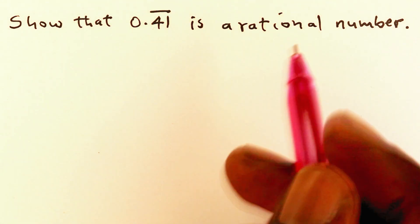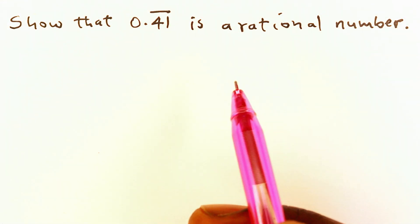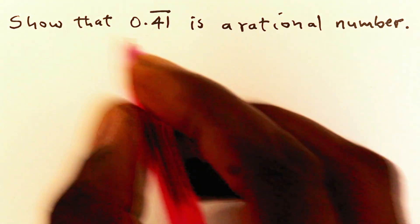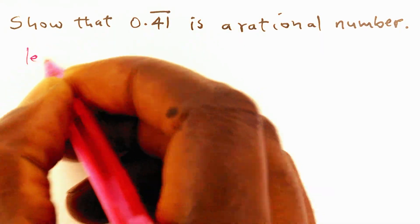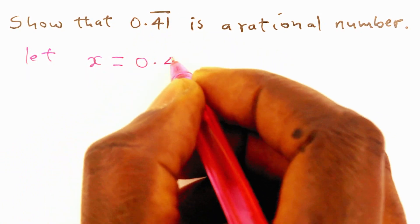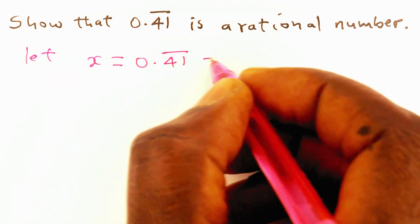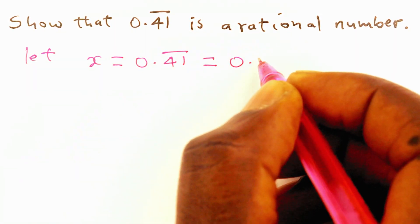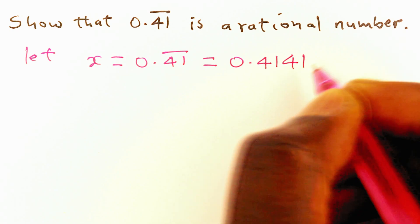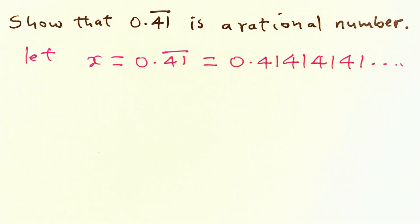To do that, we're going to convert this recurring number into a fraction. We can let x represent this number, that is 0.41 recurring. This means we have 0.414141 dot dot dot. It is 41 forever, or 41 recurring.